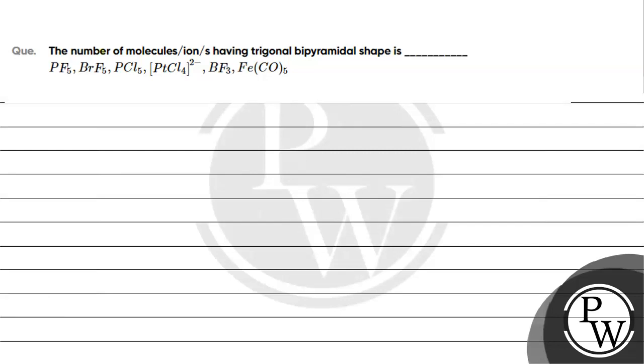Hello, we'll treat this question. The question says number of molecules or ions having trigonal bipyramidal shape. Remember that trigonal bipyramidal shape, the key concept for this question is steric number. Steric number is basically the sum of lone pairs and sigma bonds.